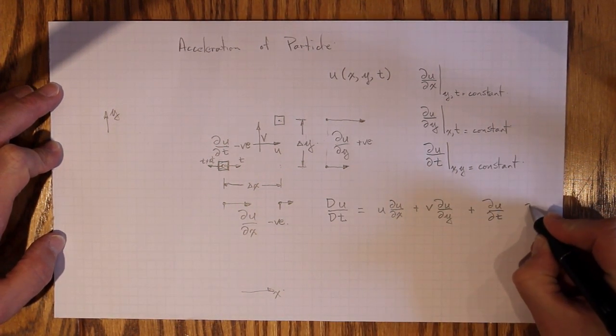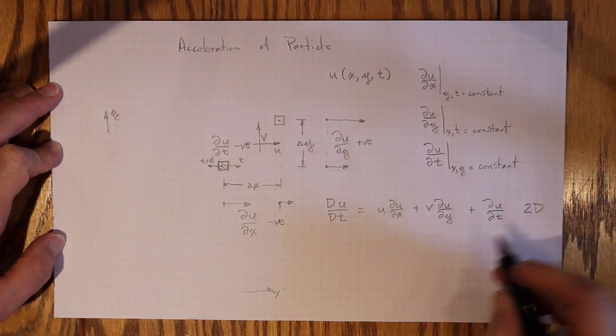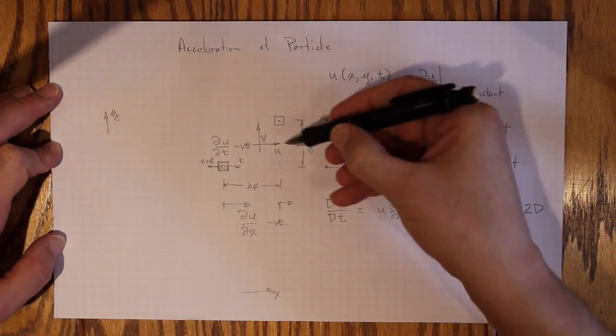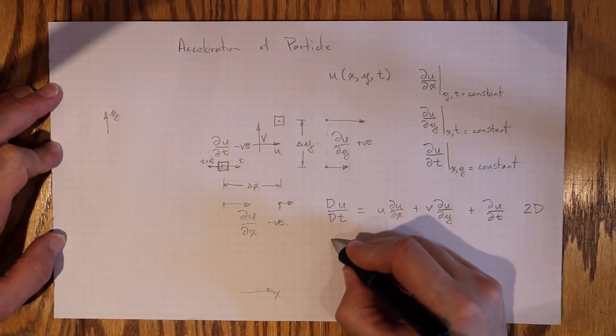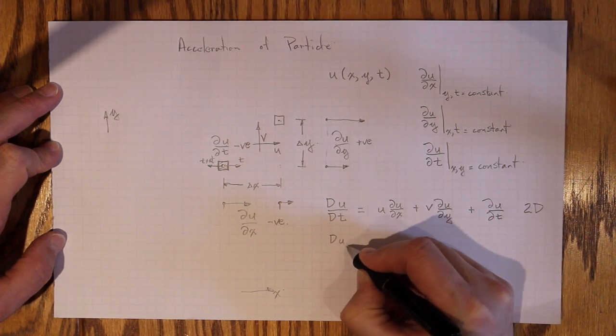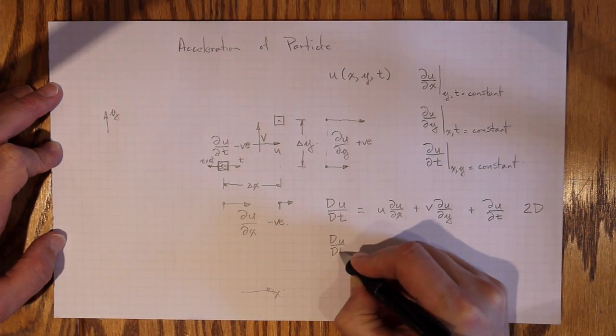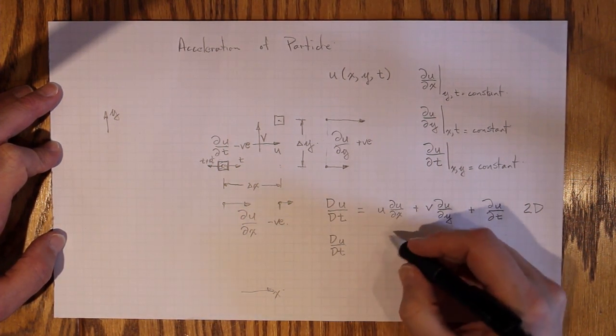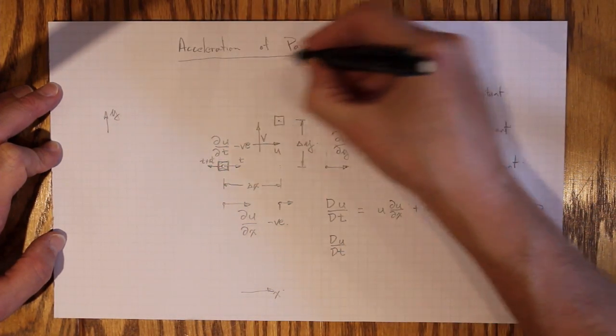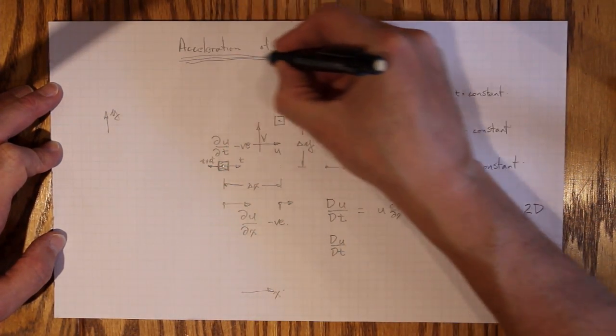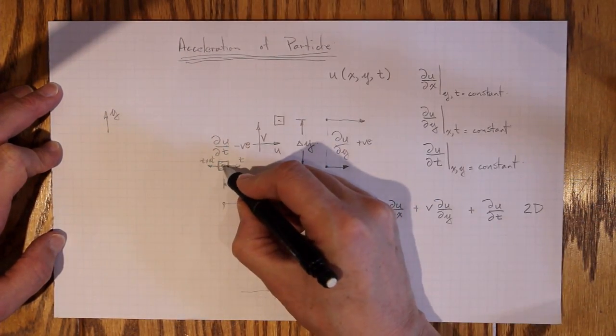So this is what we get for two dimensions. And if we allow for the fact that we've got a z dimension in and out of the page here, then we'll wind up with capital Du/Dt, the substantive derivative, the acceleration for the particle, rather than the change in velocity at a given location.